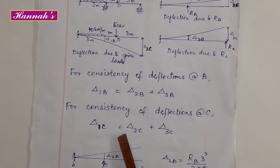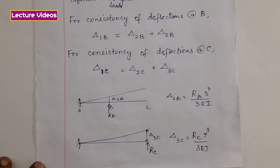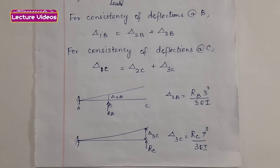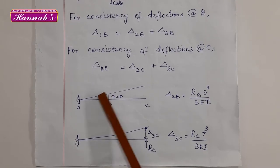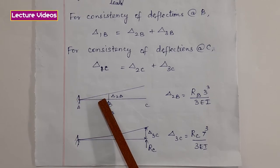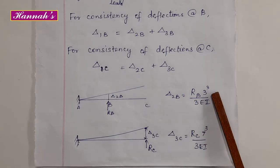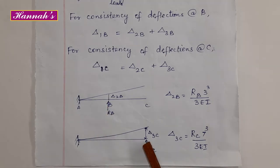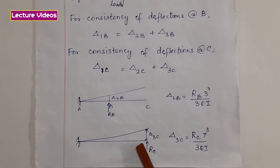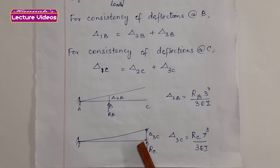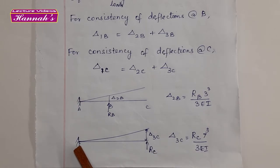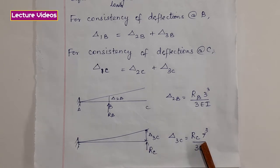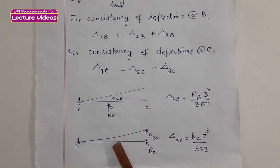Some of these values can be obtained directly from basic expressions; the rest need to be determined. We use the unit load method for calculation of the redundants. When RB alone acts, it is like a cantilever beam with a concentrated load at the free end, so delta 2B equals WL³/3EI where L is the distance from A to B. Similarly, delta 3C with RC alone acting at C is also WL³/3EI, where L equals 7 meters. However, delta 2C and delta 3B still need to be determined.